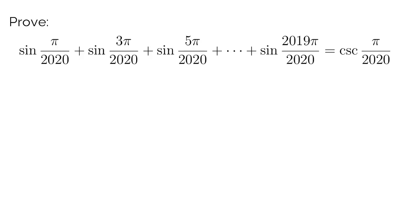Here is an interesting identity waiting to be proved: sine of pi over 2020, plus sine of 3 pi over 2020, all the way to sine of 2019 pi over 2020. We wish to show that this is in fact cosecant of pi over 2020.